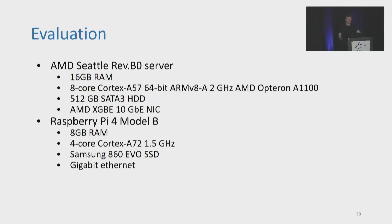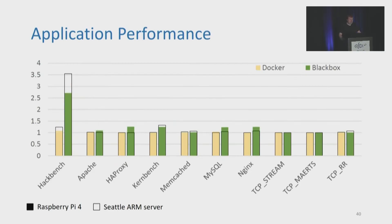To evaluate BlackBox, we ran it on both an AMD Seattle ARM server and a Raspberry Pi 4 Model B, measuring the performance of various application workloads: Hackbench, Apache, HAProxy, Kernbench, MemcacheD, MySQL, NGINX, and NetPerf. The solid bars indicate results for the Raspberry Pi 4 and the overlaid outline bars indicate results on the AMD Seattle ARM server. On the Y-axis, we have performance relative to the unmodified OS running applications directly without a container, comparing Docker containers on the unmodified OS with BlackBox including IPC encryption cost. In most workloads, performance is within 15% of native. A notable exception is Hackbench, which forks thousands of processes, constantly context-switches while doing very little work, and sends single-byte IPC messages that need to be encrypted and decrypted — atypical of real application workloads whose performance is much less affected.